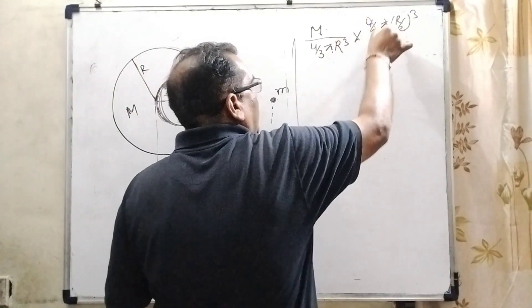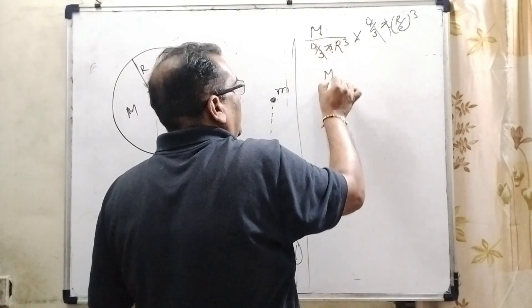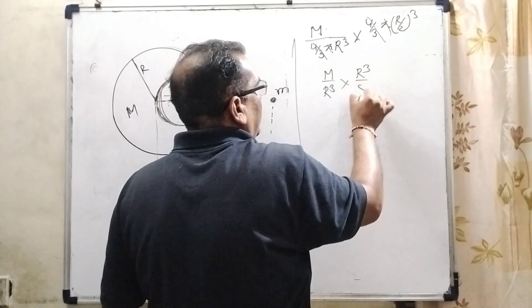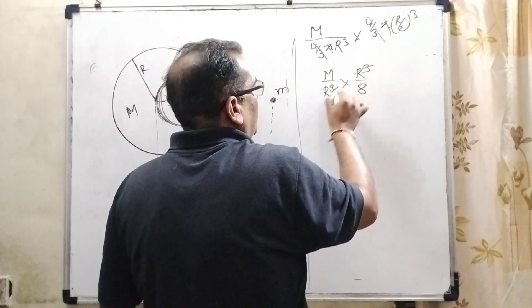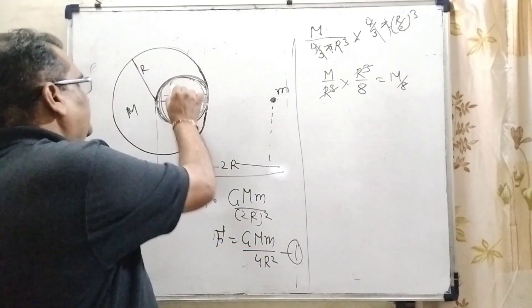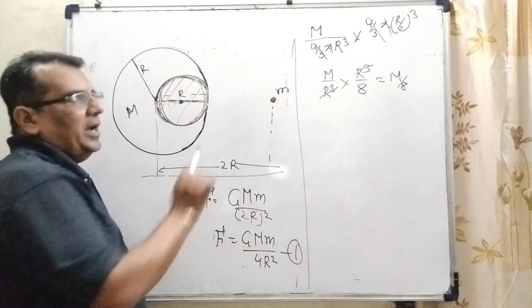4 by 3 pi, 4 by 3 pi cancel out. M by R cube into R cube by 8. So R cube R cube cancel. Then mass of this sphere is M by 8.